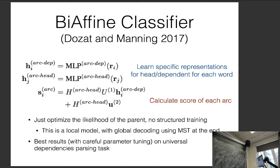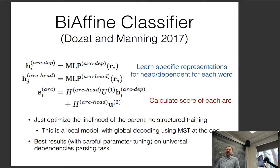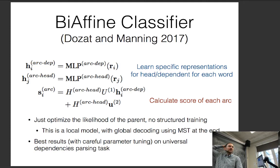Careful parameter tuning is really important here — half the talk at the universal dependency parsing workshop was spent discussing how they tune parameters. The good news is the paper gives you a recipe for parameters that work well for this task. The parameters are: word embeddings, a BiLSTM that converts embeddings to representations, MLPs for arcs and dependency/head, and the biaffine weight matrices.